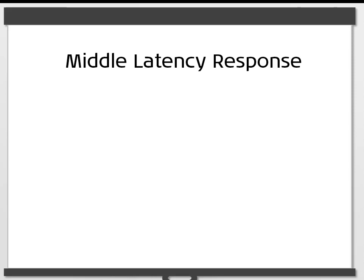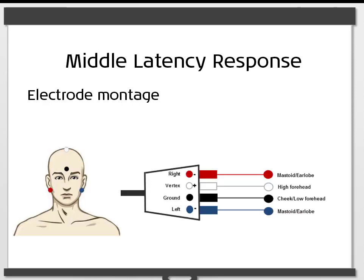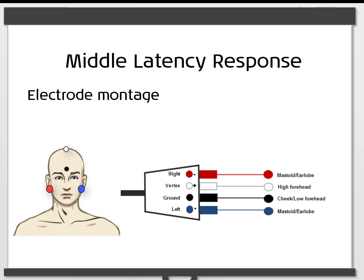It is possible to record the MLR using the same electrode montage as that used in ABR. The vertex electrode is placed ideally on the vertex or, if not possible, on the high forehead. The reference electrodes can be placed on the low mastoids or on each of the earlobes, and the ground is usually positioned on the cheek or low forehead.